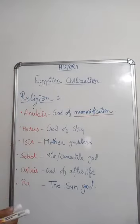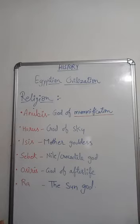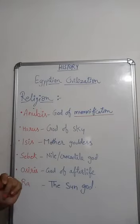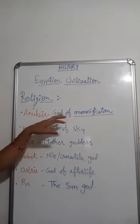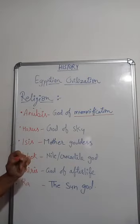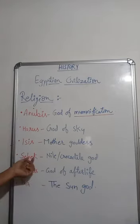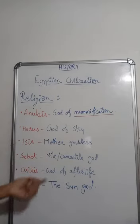Other important gods include Horus, the god of the sky; Isis, the mother goddess; Sobek, the Nile or crocodile god; Osiris, the god of the afterlife; and Ra, the sun god. The Egyptians took great care to preserve the bodies of the dead — such bodies are called mummies. Animals like the cow, crocodile, snake, and hawk were also considered sacred.